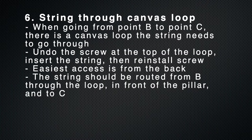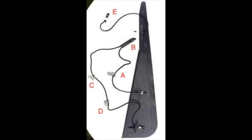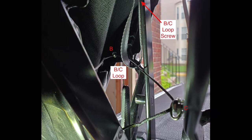On the car, when the string goes from point B to point C, there's a canvas loop that the string needs to go through. In order to go through that loop, you have to find the canvas loop, undo it, put it around the string, and then reattach it.